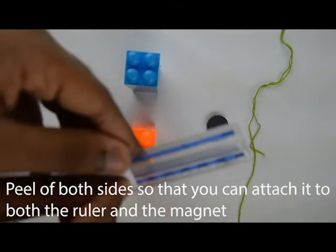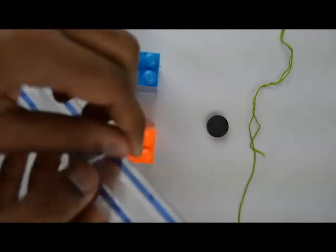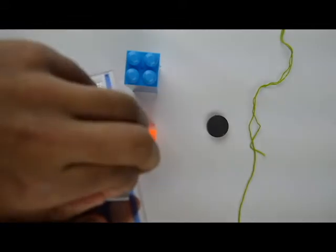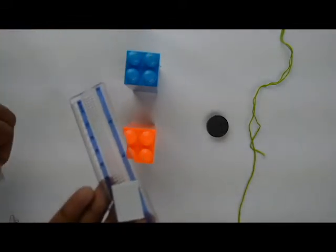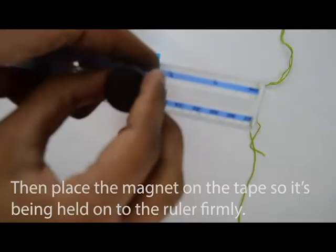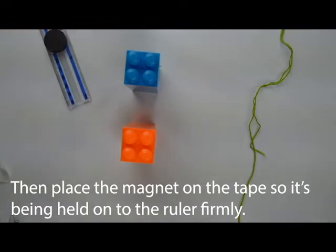This way you can have stickiness on both ends. Then place the magnet on top of it so that it's being held on by the tape towards the ruler.